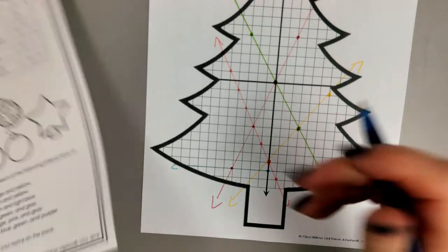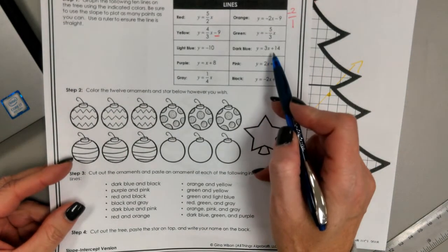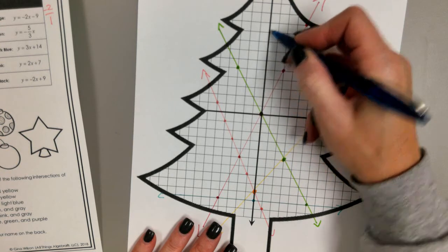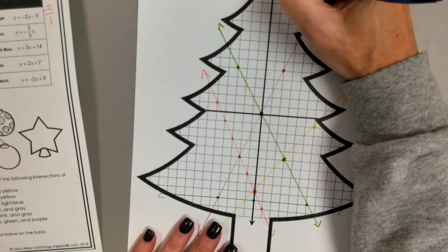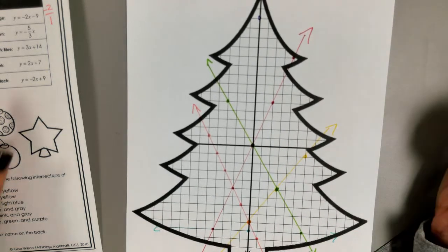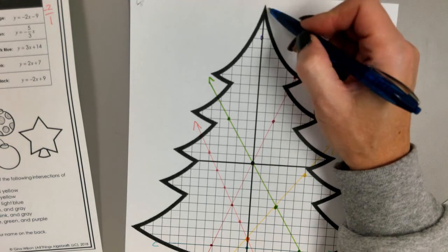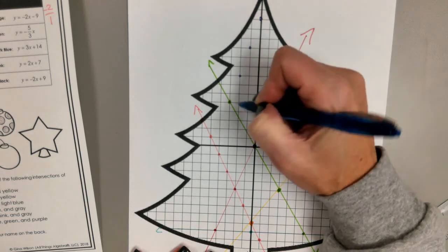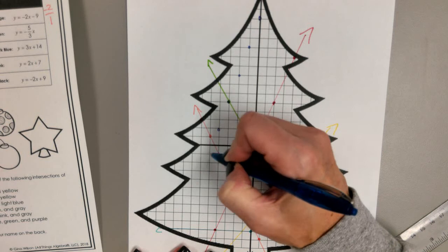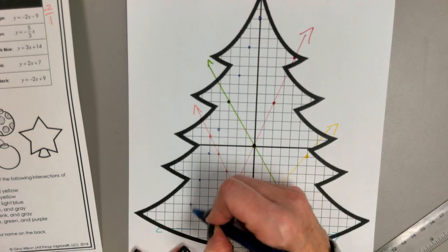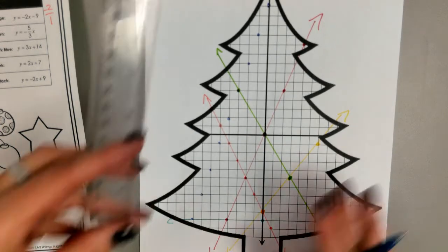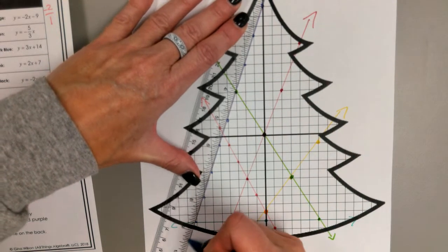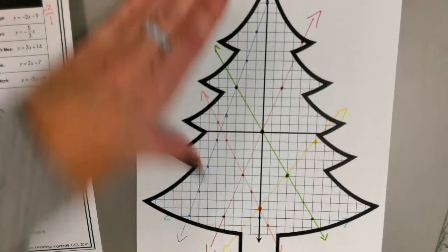All right. Then we had a dark blue line that said y equals 3x plus 14. So 14 is where I start. And then 3x. So obviously I don't have room to go up three and over one, so I'm going to go down and to the left, down and to the left. And I do it till I run out of tree. So this is my dark blue line.